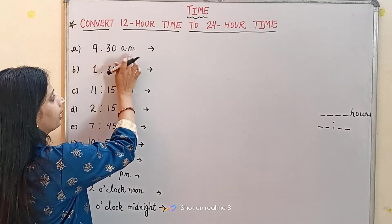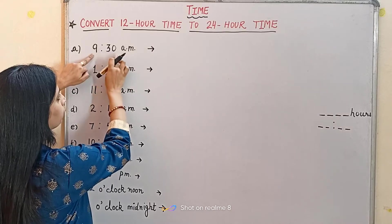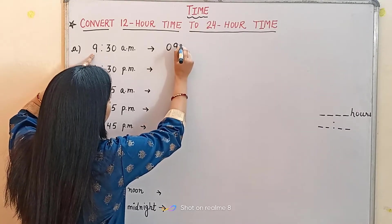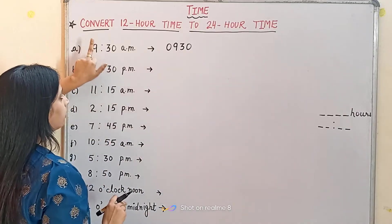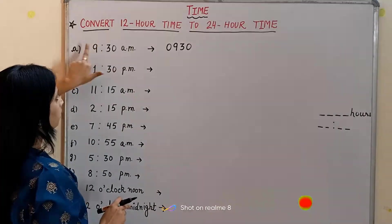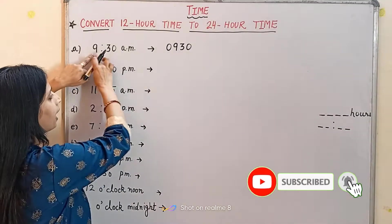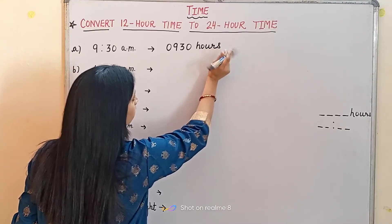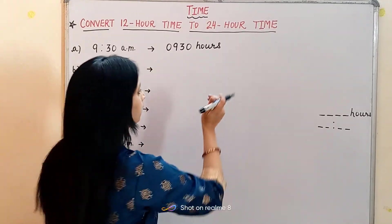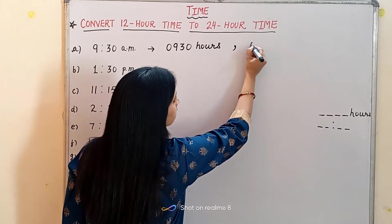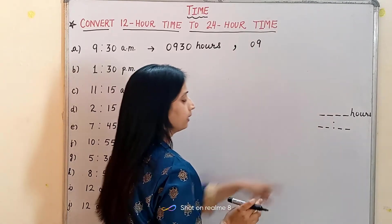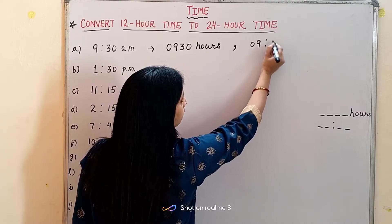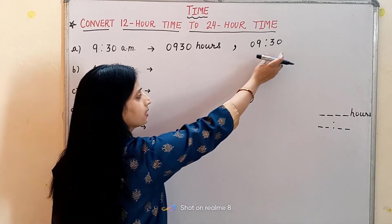So let's see how. First example is 9:30 AM. We have to make the time in 4 digits, so we write 0930 — simply remove the colon and make the time in 4 digits. If the digit is below 10, we put a 0 before it, that's why before 9 we put 0. Then we write 'hours' after it. The second way to write the time in 24-hour format: we write 09, put the colon, and write 30. So it is 9 hours 30 minutes.